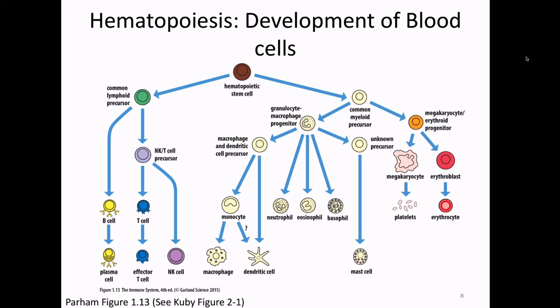The first split that happens is the stem cell decides whether to become a myeloid cell or a lymphoid cell — those are two separate lineages. If it becomes a lymphoid precursor, it will eventually make one of the lymphocytes. If it becomes the myeloid precursor, it will become one of the myeloid cells and then make another decision about which type. All your adaptive immune cells come from the lymphoid precursor; all your innate immune cells come from the myeloid precursor.